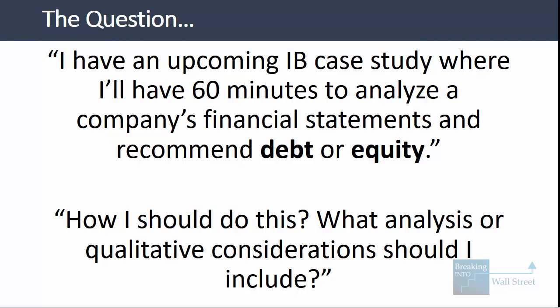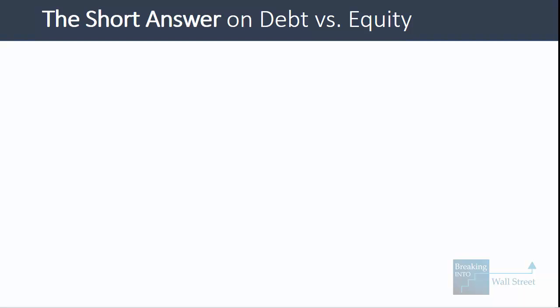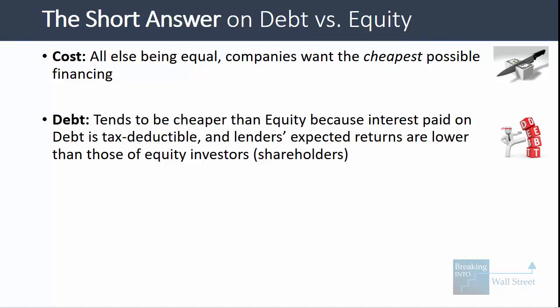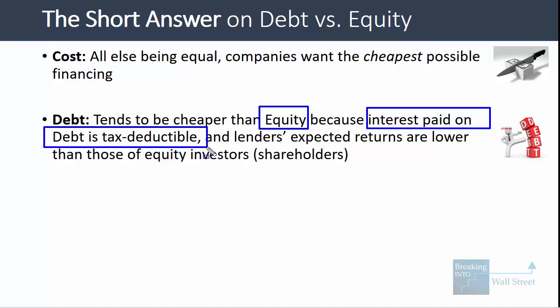I'm going to give you a short answer that explains how to do this quickly and efficiently, and then we'll go into a slightly longer answer and look at a real-life example of a company that had to choose between raising debt or equity. The short answer is that all else being equal, companies want the cheapest possible financing for expansion projects, M&A deals, and anything else for which they might need extra capital. In most cases, this means debt because interest paid on debt is tax deductible, and lenders' expected returns are lower than those of equity investors.